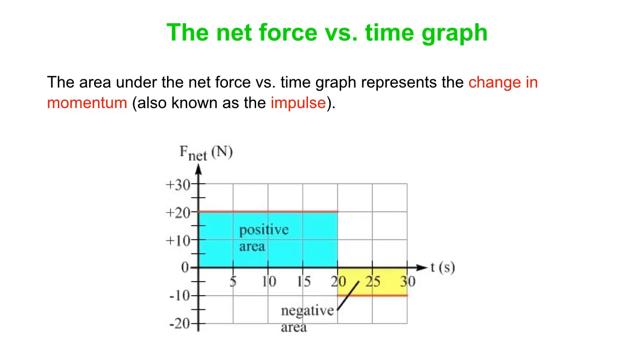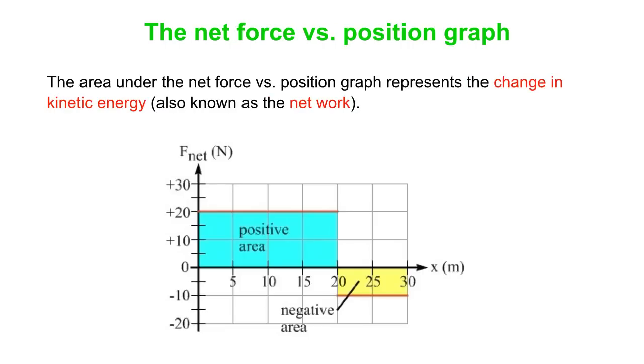It can also be negative if there's a component of the net force opposite to the direction of the displacement, or if the net force is simply directly opposite to the displacement. This is really coming from the cosine theta piece of the equation. It's all about how the net force compares in direction to the displacement. We talked about the net force versus time graph. The area under that curve represents the change of momentum, also known as the impulse. If we flip over to the net force versus position graph, then the area under the curve represents the change in kinetic energy, also known as the net work. You've got to pay attention to what is on the horizontal axis. If you get time there, you're thinking about momentum and impulse. If you get position, you're thinking about energy and work.